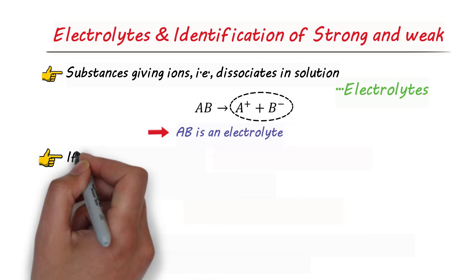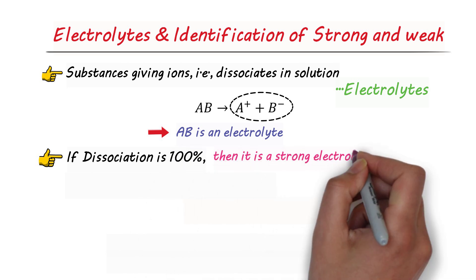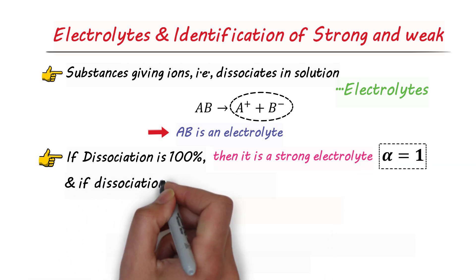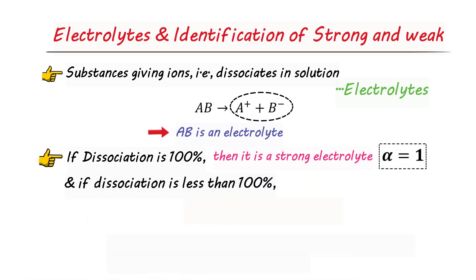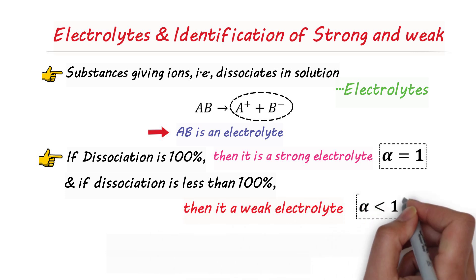Now, if dissociation is 100%, then it is a strong electrolyte, for which alpha, the degree of dissociation, is equal to 1. And if dissociation is less than 100%, then it's a weak electrolyte, for which alpha is less than 1.